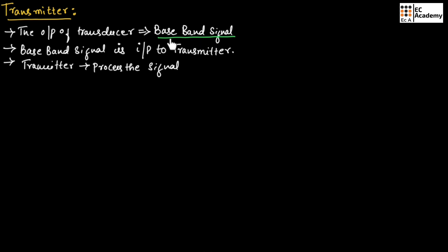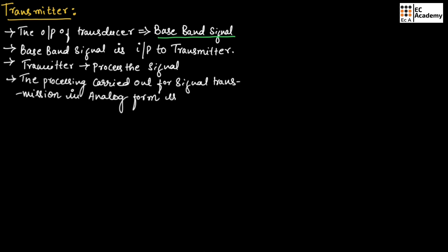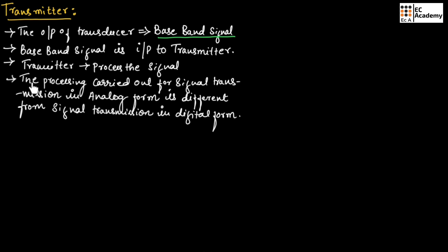The transmitter will process this baseband signal before transmission. The processing carried out for signal transmission in analog form is different from signal transmission in digital form. So the processing for both analog signal as well as digital signal will be different.